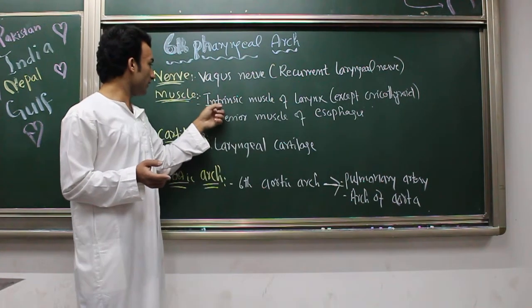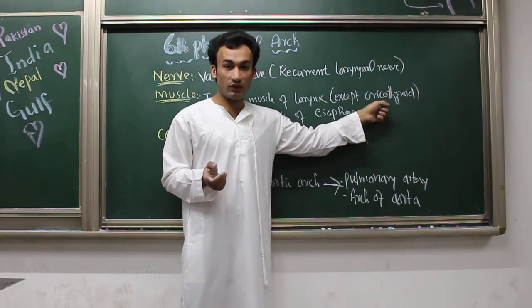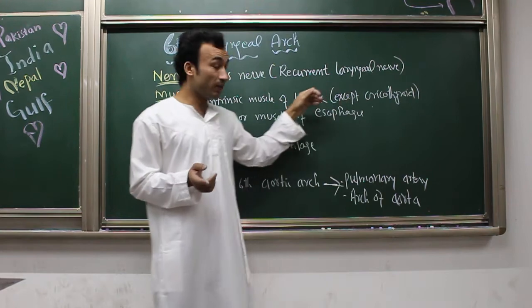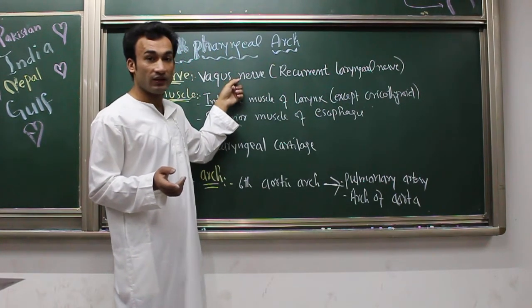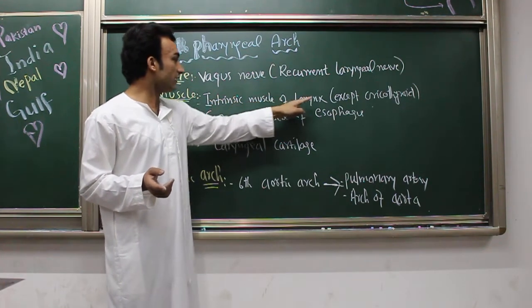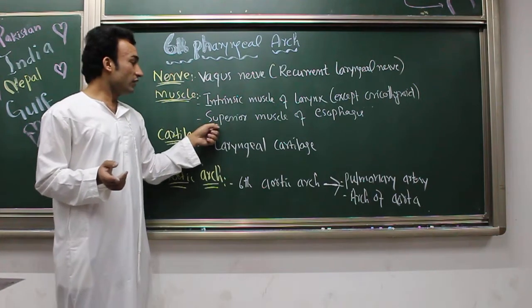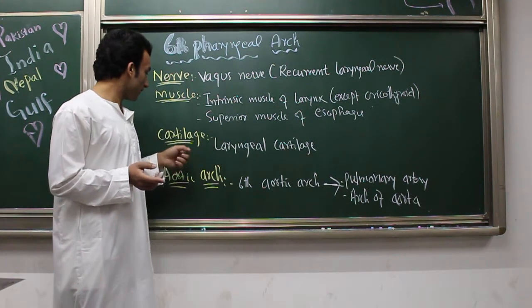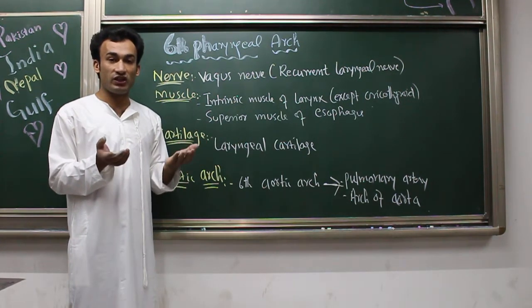The muscles of the sixth pharyngeal arch are the intrinsic muscles of the larynx, except cricothyroid, and the superior muscle of the esophagus. Remember this for MCQs — from this you can also deduce the nerve supply for these muscles, which is the recurrent laryngeal nerve, a branch of the vagus nerve.